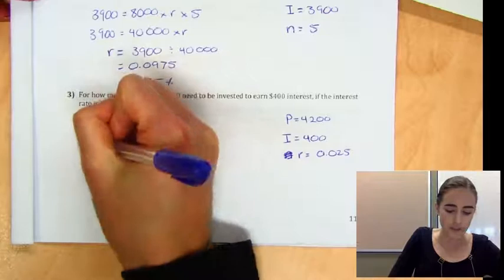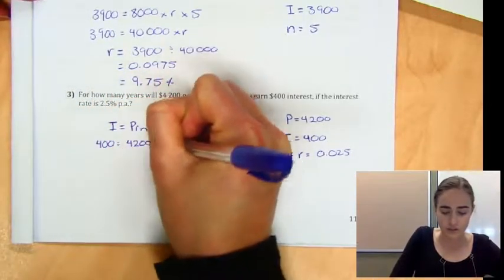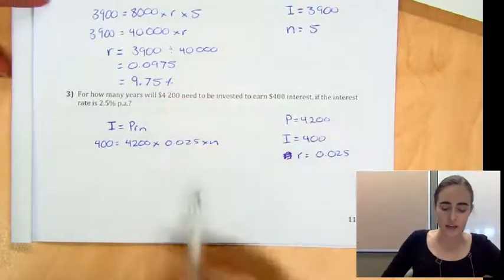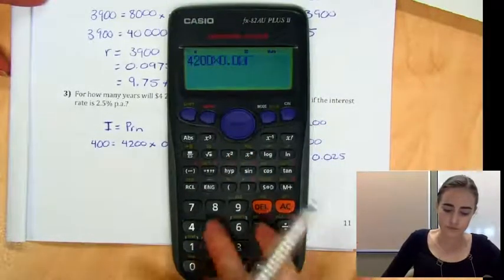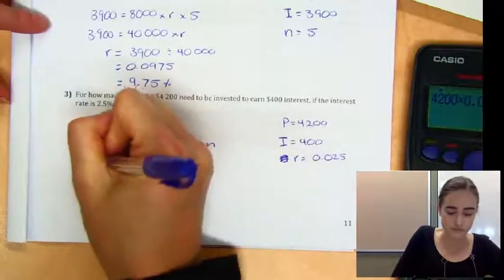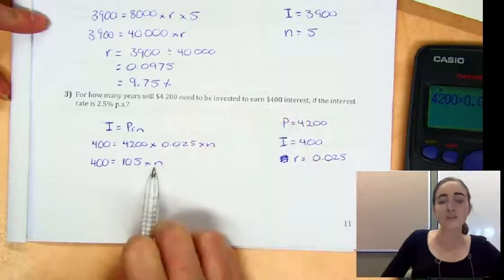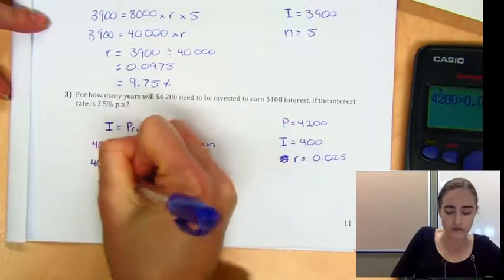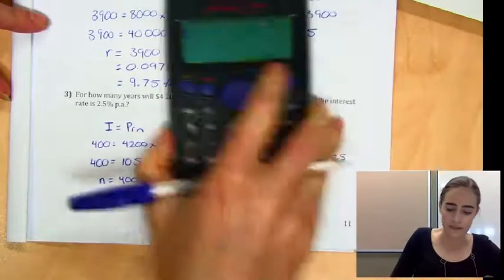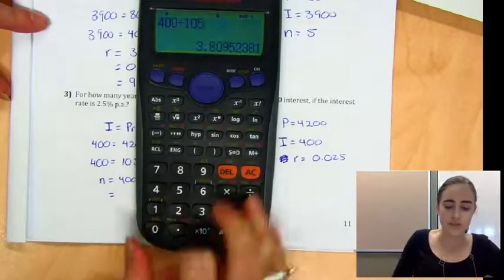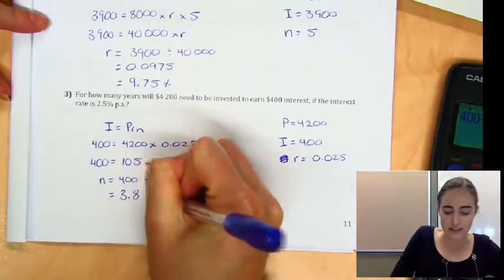So we'll sub everything in. $400 equals $4,200 times 0.025 times N. Again, simplify this bit first. That would give us 105. And then to get that N on its own, we're going to divide by 105. So N equals 400 divided by 105, which would give us about 3.8. And that would be 3.8 years.